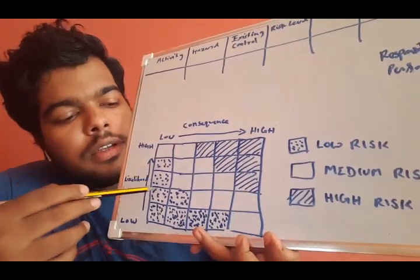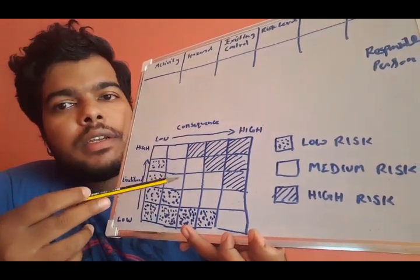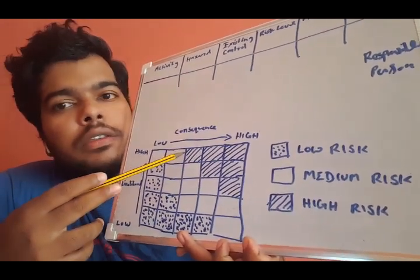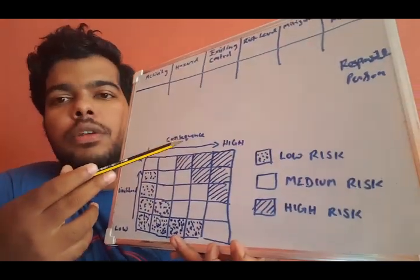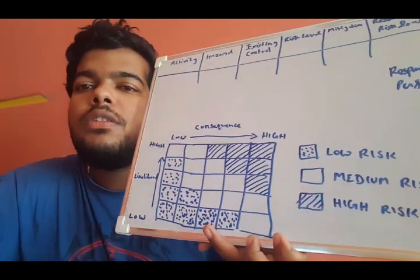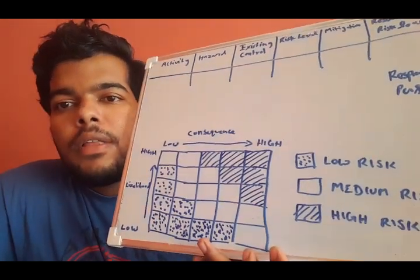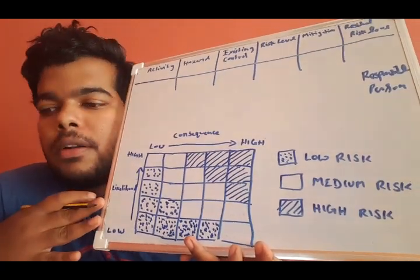So this dotted section is low risk and this middle empty section is a medium risk and this shaded section is a high risk. So this side I have a likelihood and here it's a consequence. It ranges from low to high and here it's low to high. So let's take examples and we will correlate that example with this risk matrix.